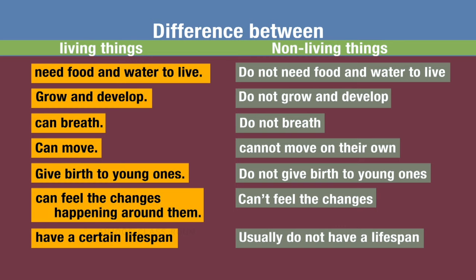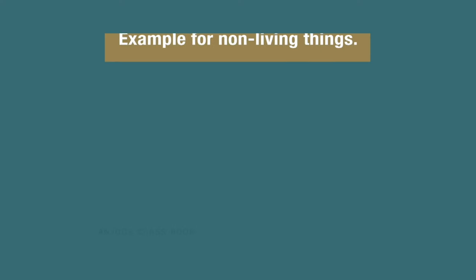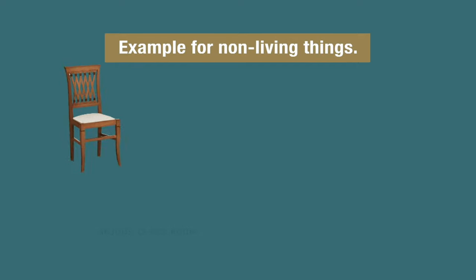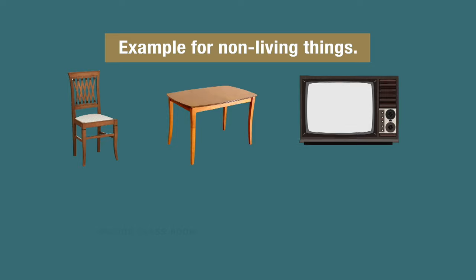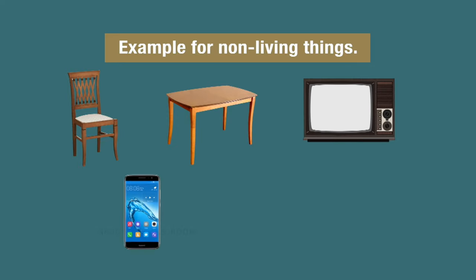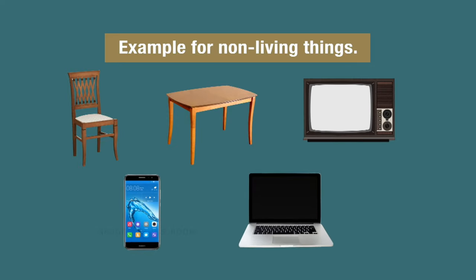So from here you get the difference between living and non-living things. Non-living things do not move on their own and they cannot feel. For example: a chair, a table, the phone or laptop you are using to watch this class — they will not move without our help. If you hit them, will they cry? No. Why? Because they don't have any feelings; they cannot sense.